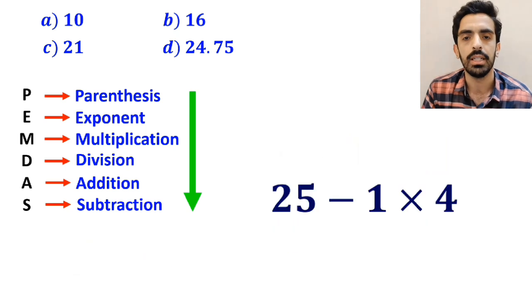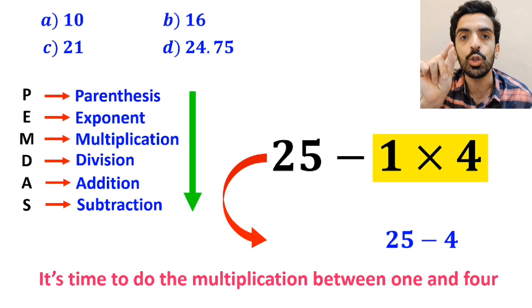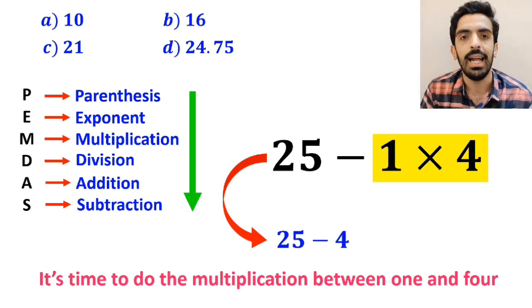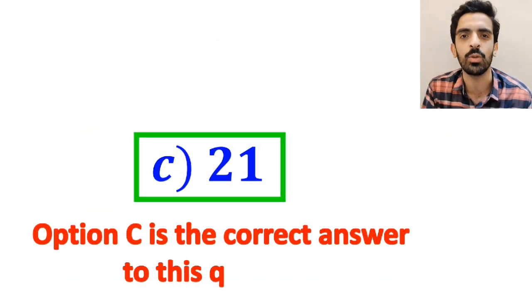Now it's time to do the multiplication between 1 and 4 which gives us 25 minus 4. And finally the value of this expression is equal to 21. Therefore option C is the correct answer to this question.